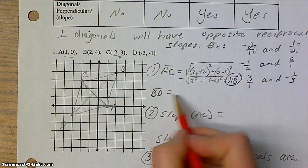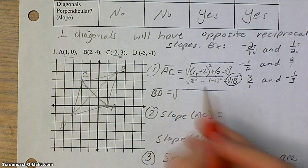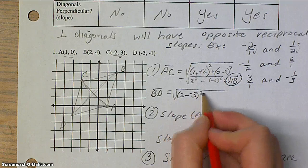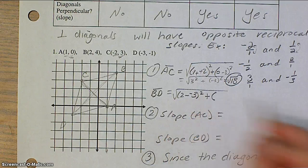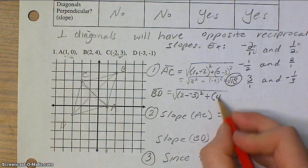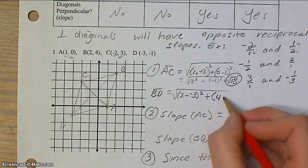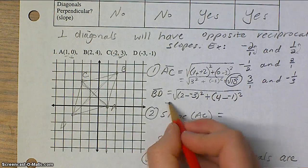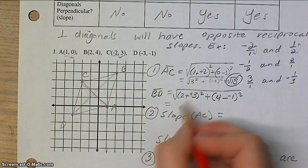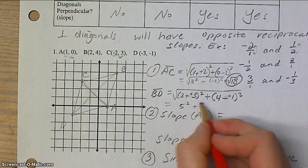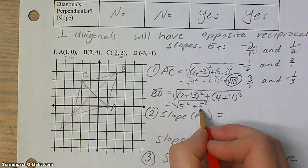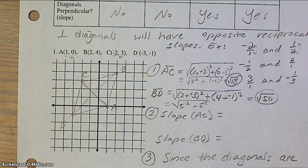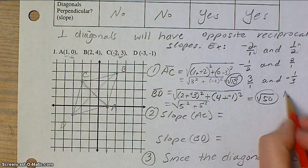Now, we're going to do the same thing for BD. Big square root, x1 minus x2 squared plus y1 minus y2 squared. And then we simplify. That's going to give me 5 squared, which is also 5 squared. So, both of those together, 25 plus 25, square root of 50. Right away, I could see clearly they are not congruent.